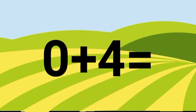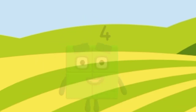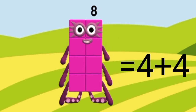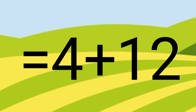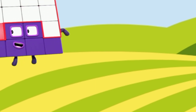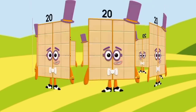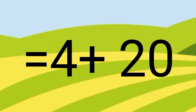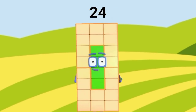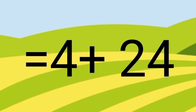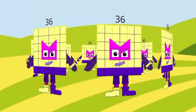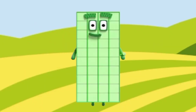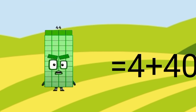Zero plus four equal to four. Four plus four equal to eight. Eight plus four equal to twelve. Twelve plus four equal to sixteen. Twenty plus four equal to twenty-four. Twenty-four plus four equal to twenty-eight. Twenty-eight plus four equal to thirty-two. Thirty-two plus four equal to thirty-six. Thirty-six plus four equal to forty.